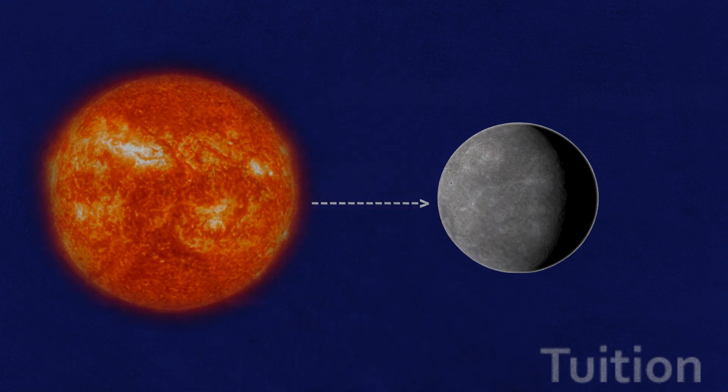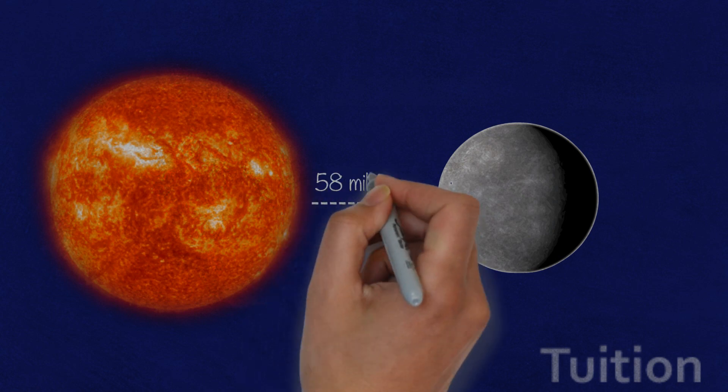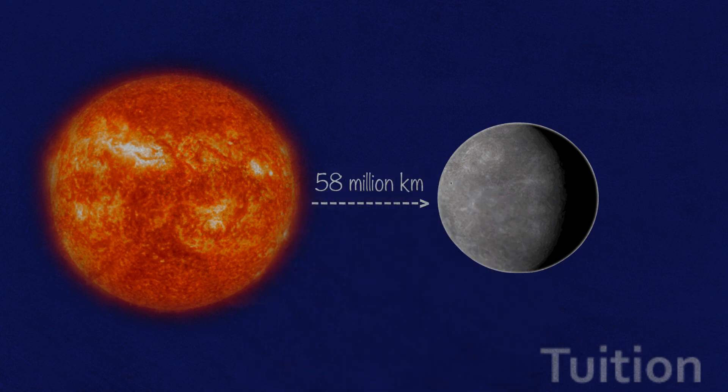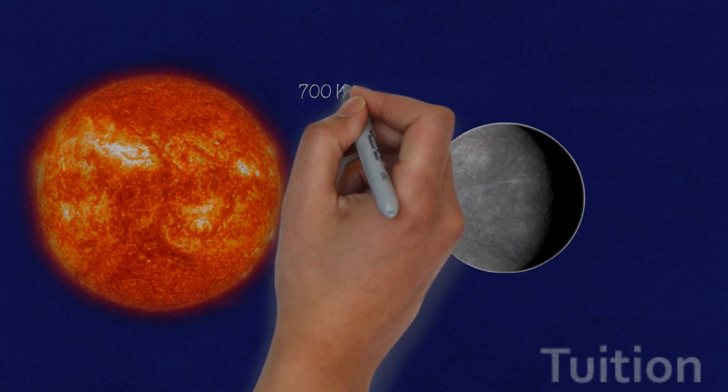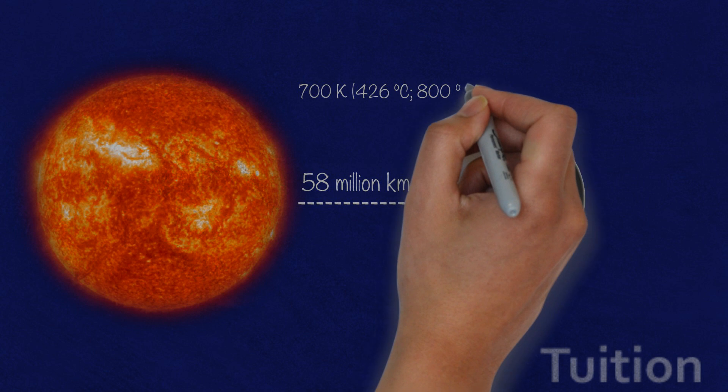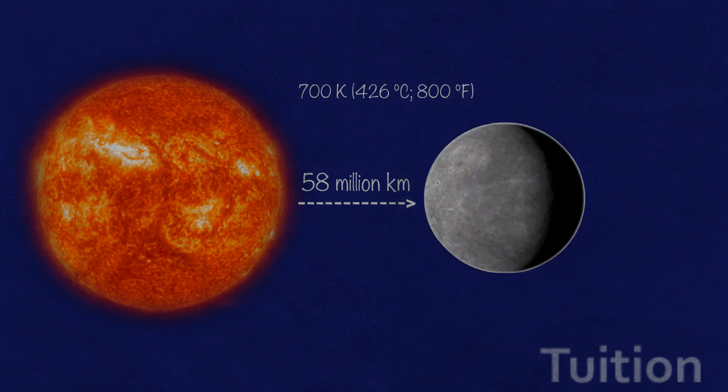Mercury orbits at a distance of 58 million kilometers traveling in a blast furnace of scorching radiation. Its temperatures can skyrocket to 700 Kelvin or 426 degrees Celsius on the sunward side.